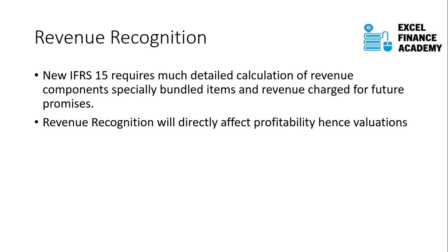Another example: when you buy a car, the company gives you a three-year guarantee at no extra charge — it's bundled into the car price. So the company may charge you $100,000, but $90,000 is for the car value and another $10,000 represents the three or four year guarantee, which is free of cost to the customer.